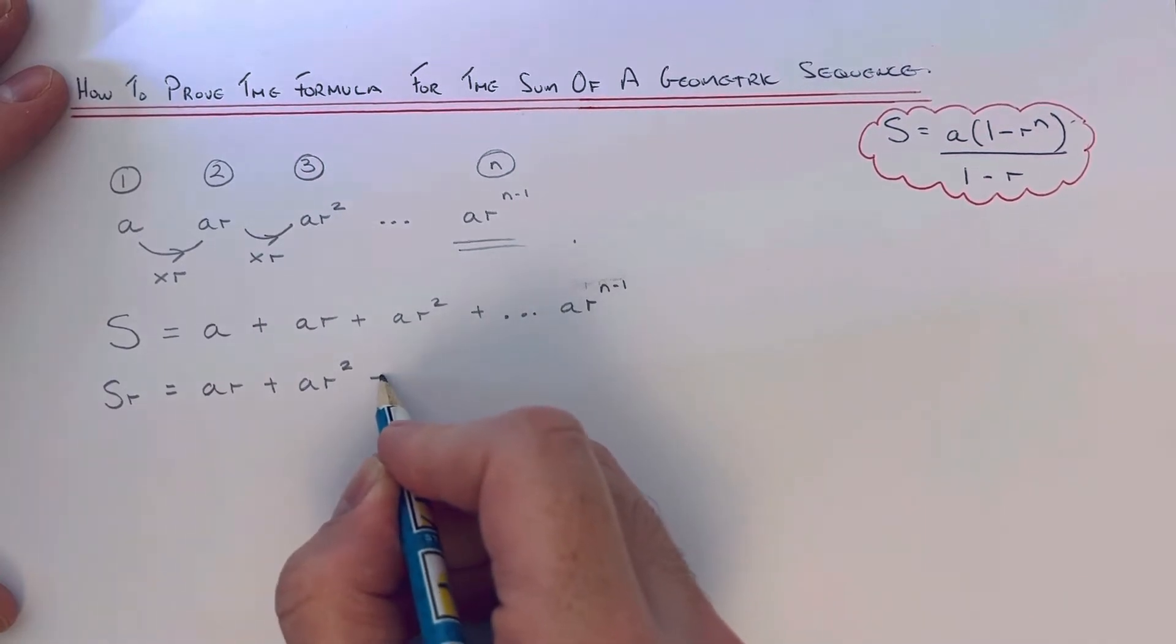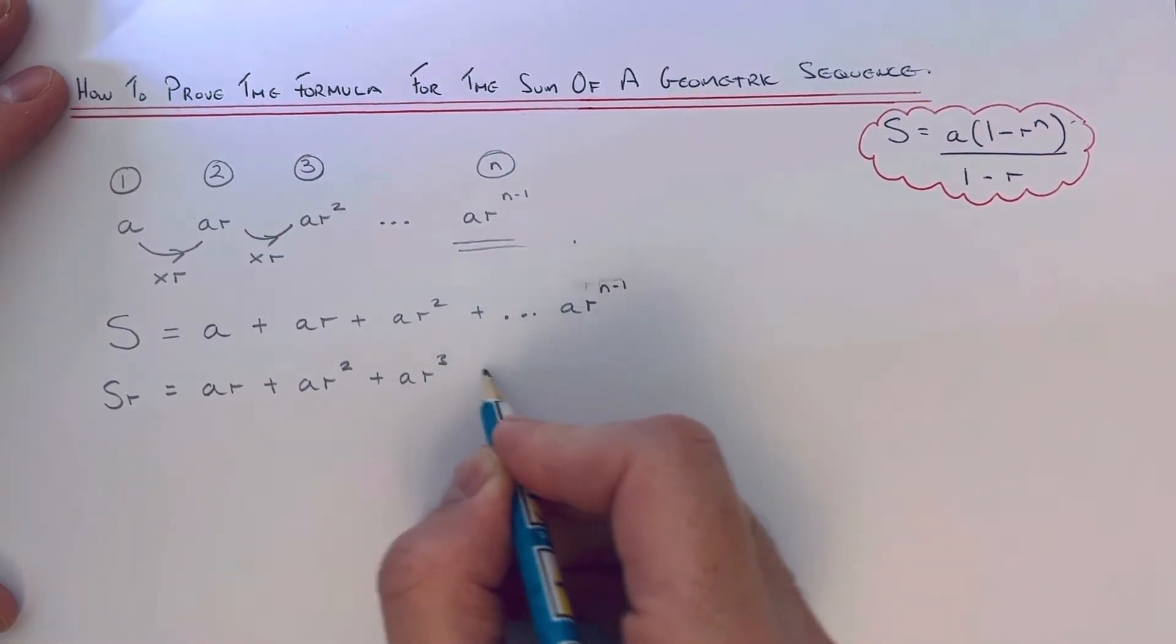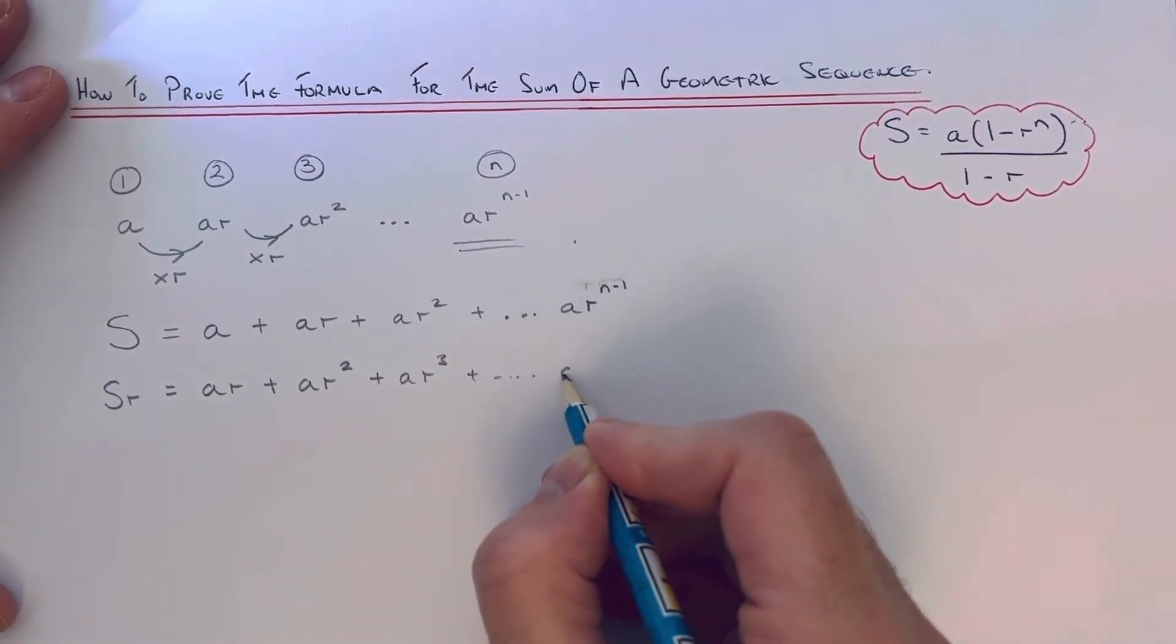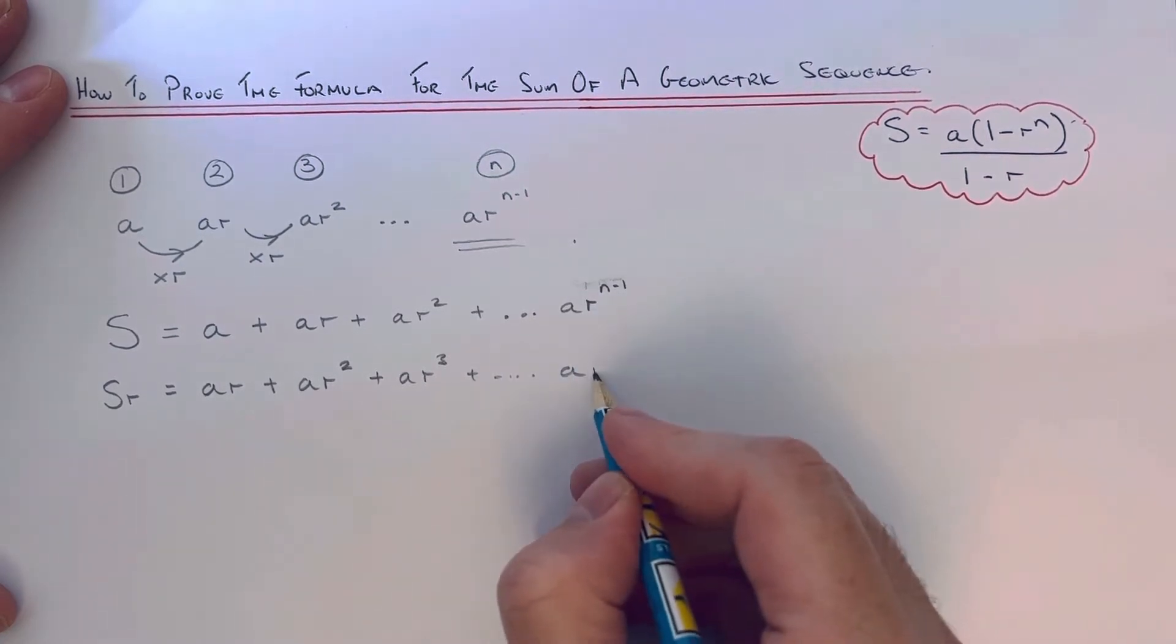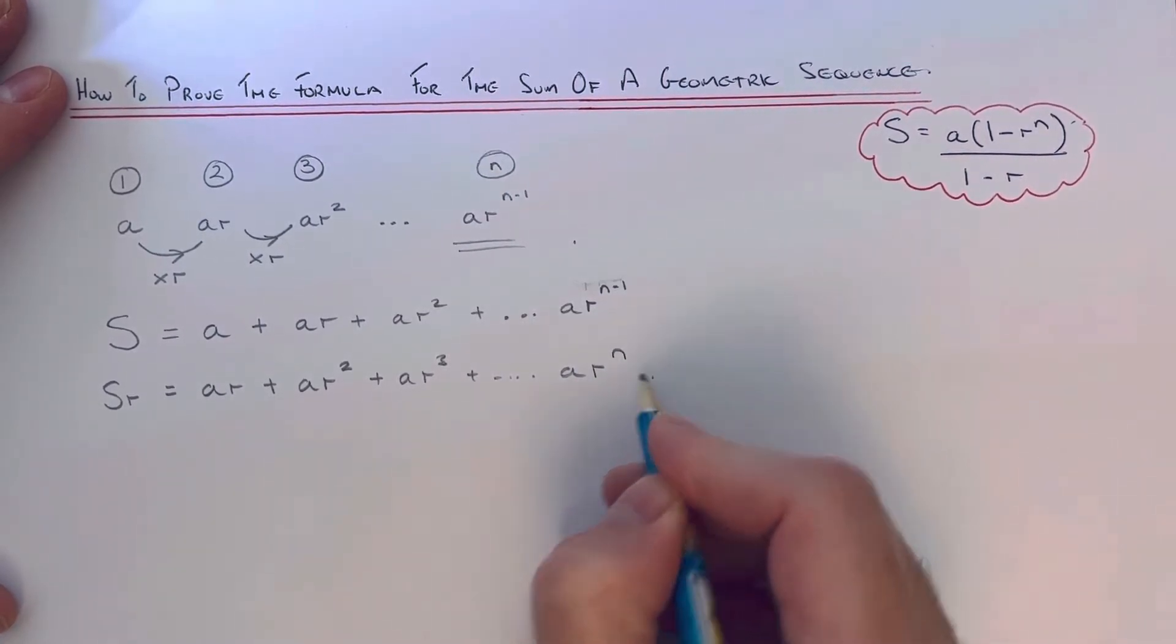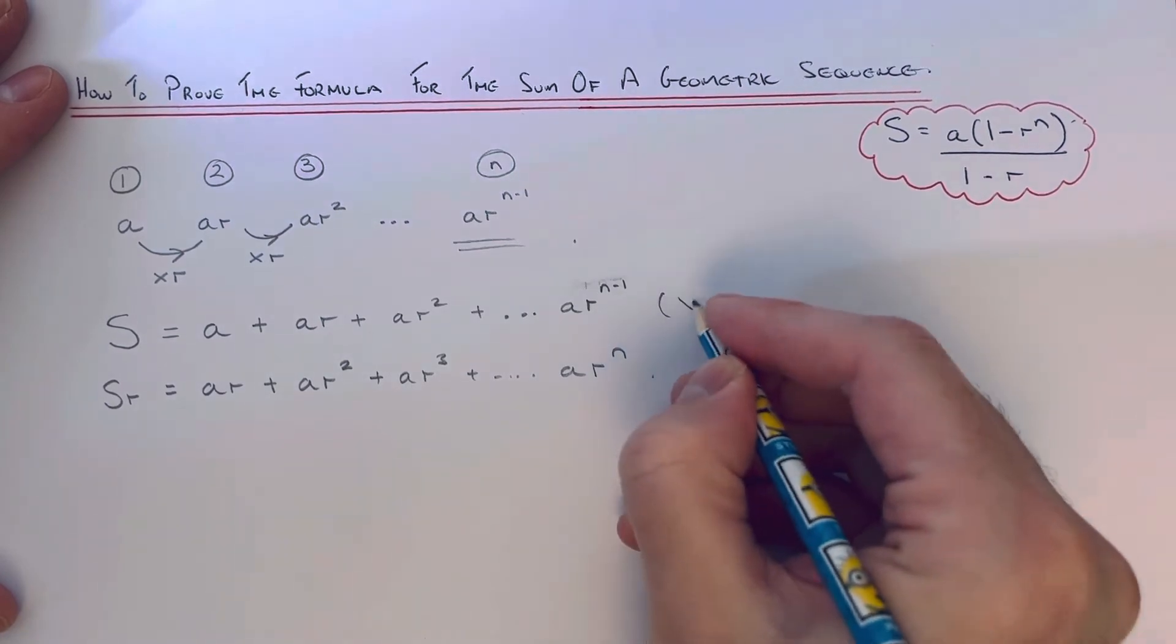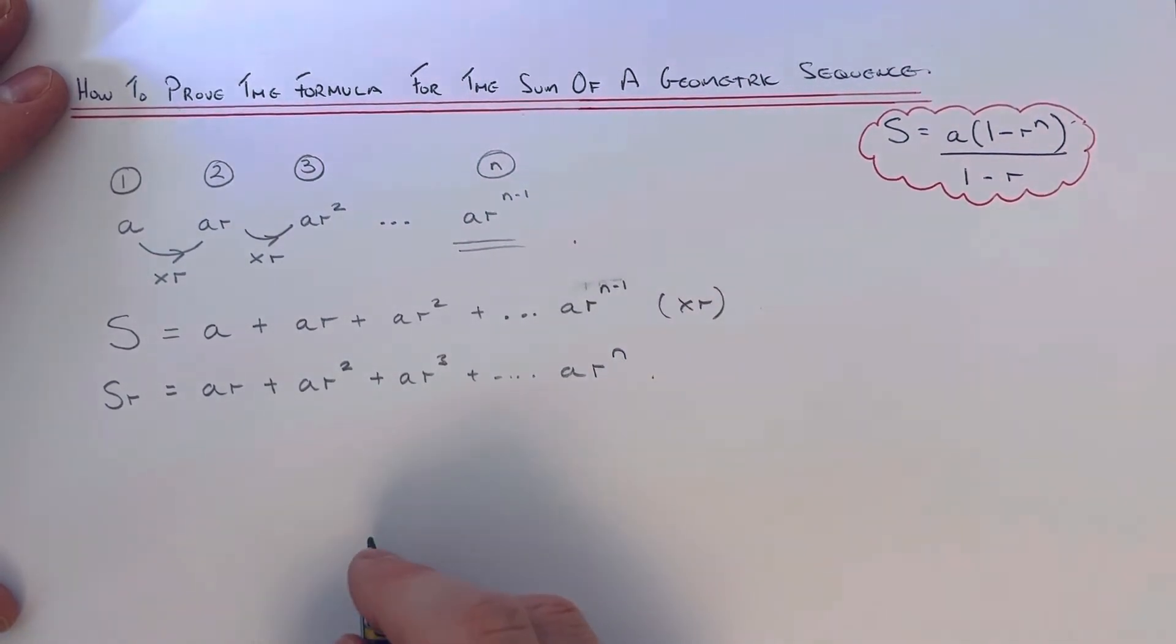That would be multiplied by r to make it ar squared. Our next term will be ar cubed, all the way up to the end, which will be ar to the power of n. So we've multiplied this by r, right?